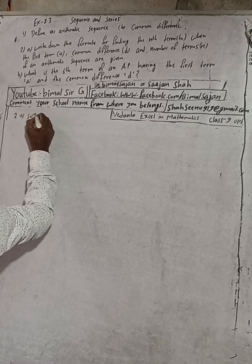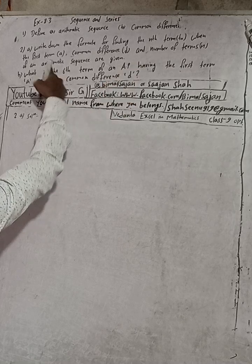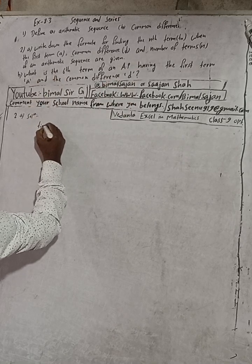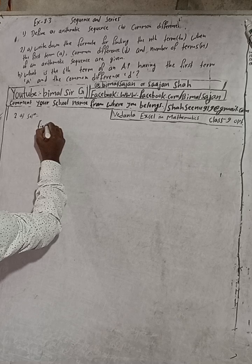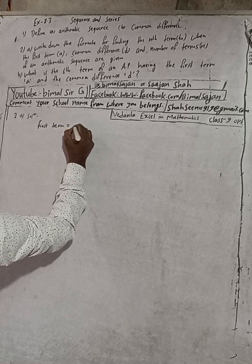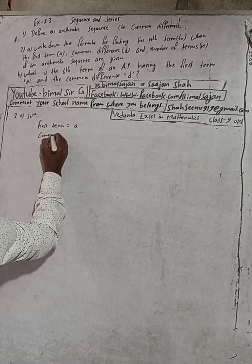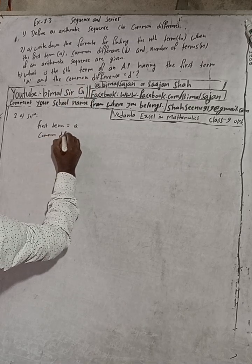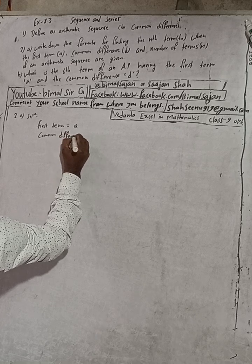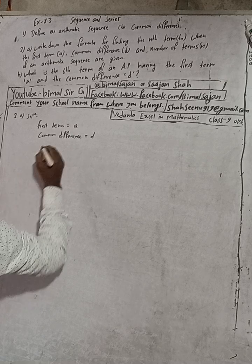Given: first term is given here, and common difference is given by d, and the number of terms.